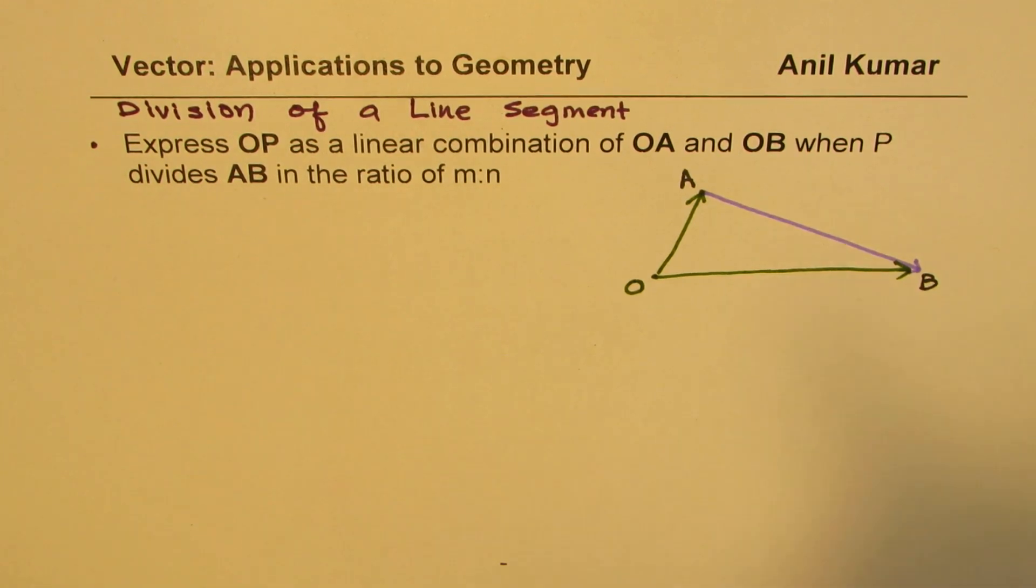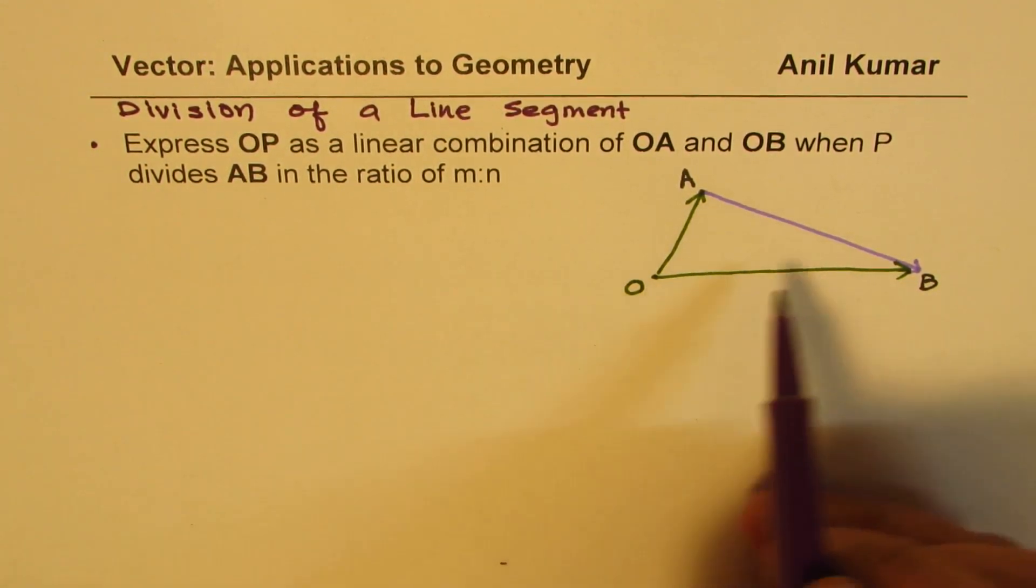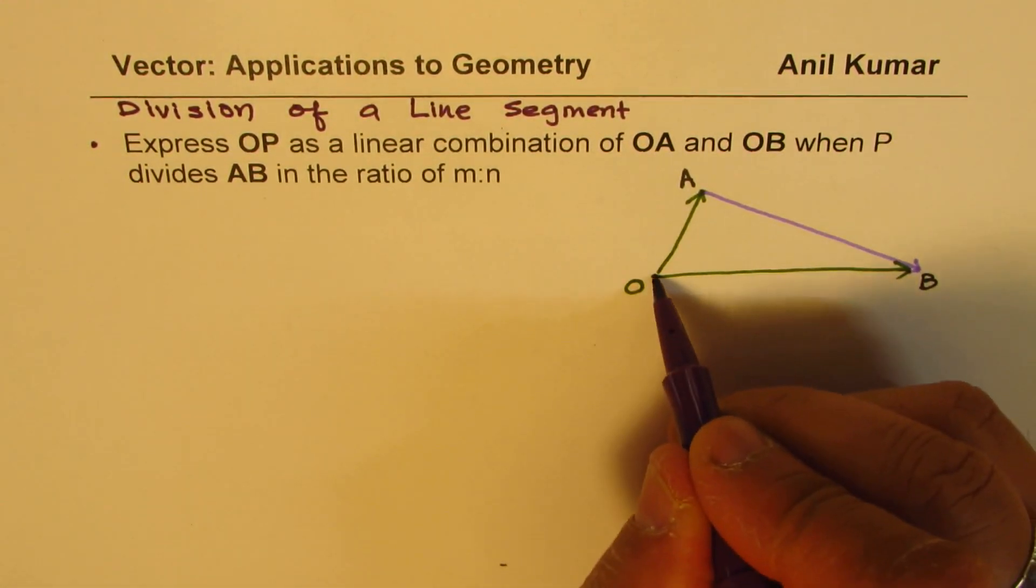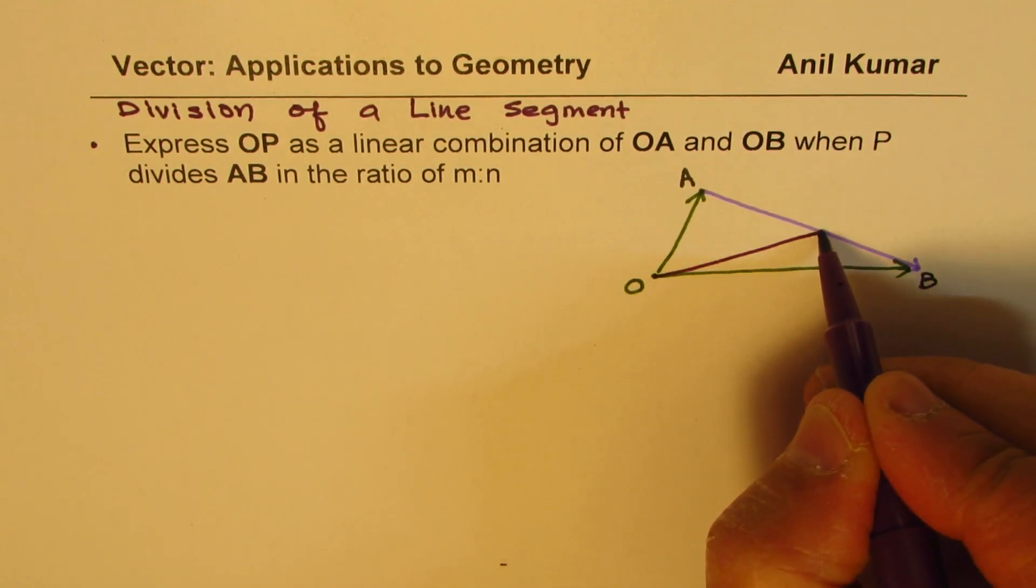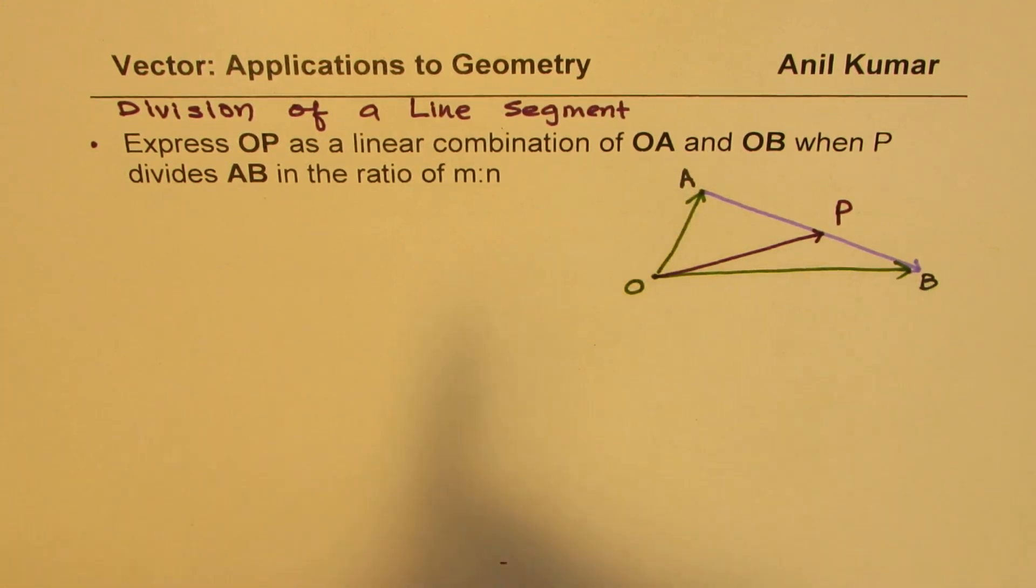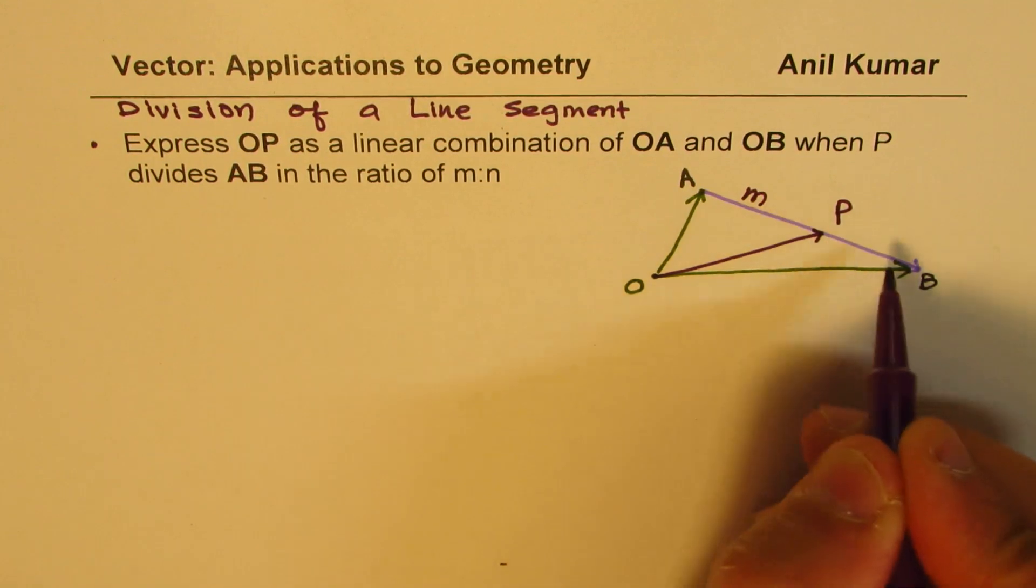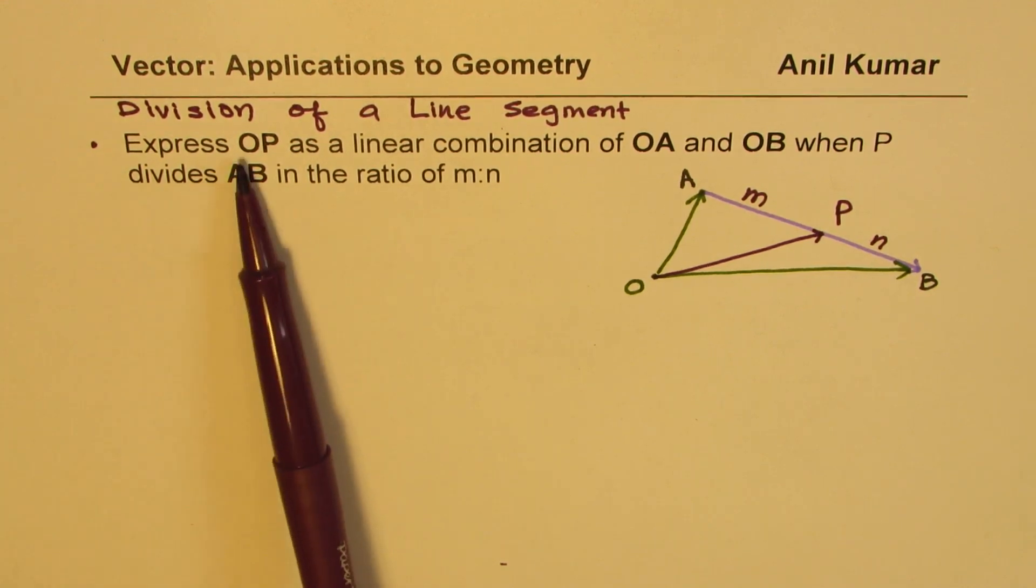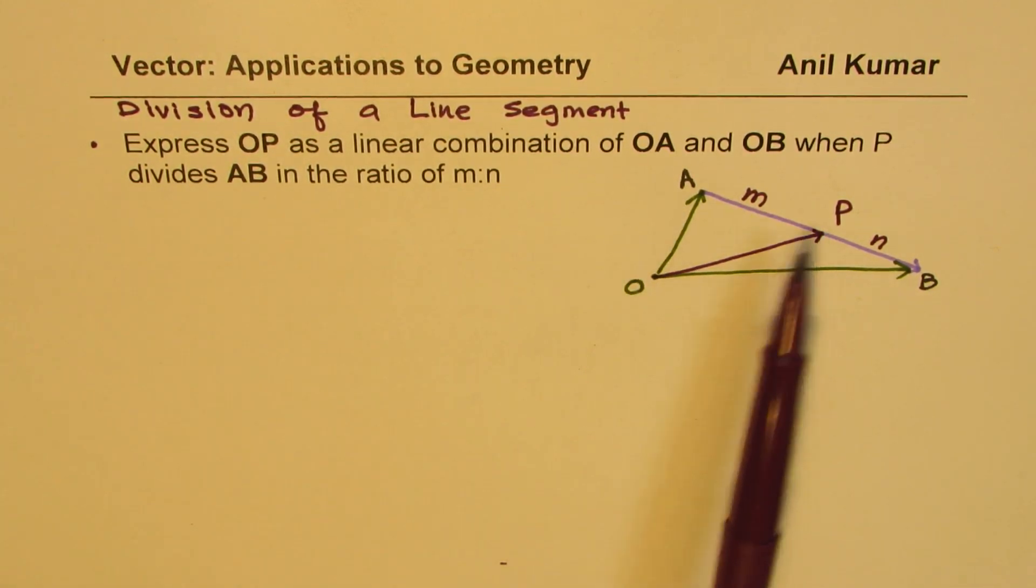What we are saying here is express OP. Some point P is here which divides AB in the ratio of M is to N. Let us say this is our point P, which divides AB in the ratio of M to N. That means this is M and that is N. We need to express OP in terms of OA and OB.